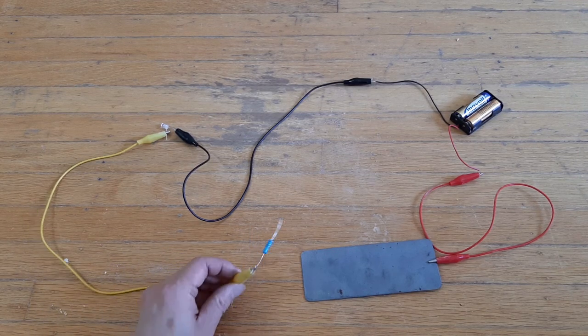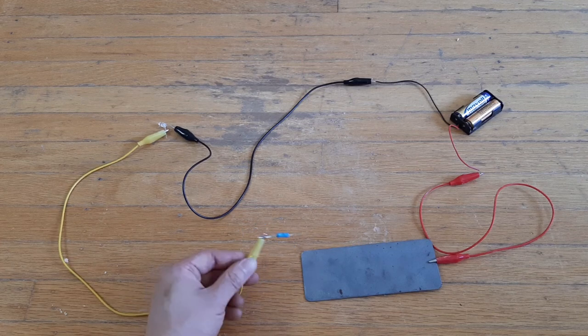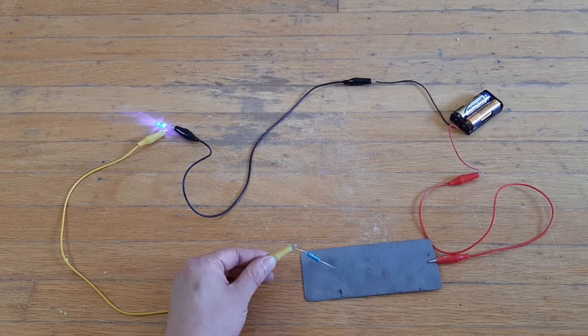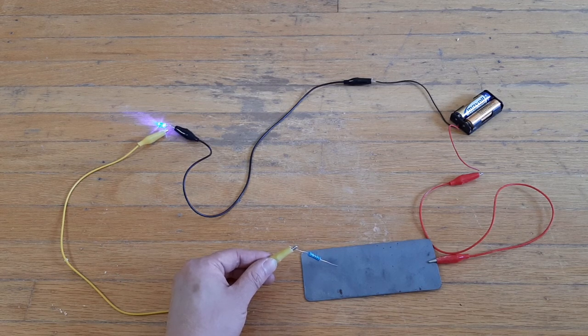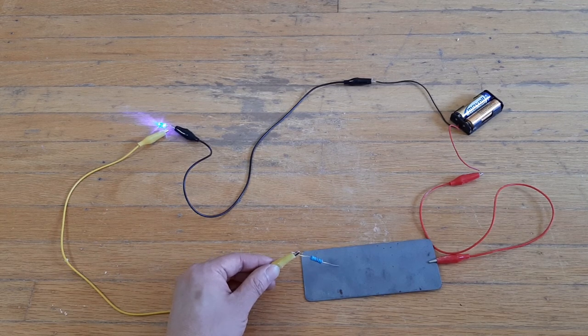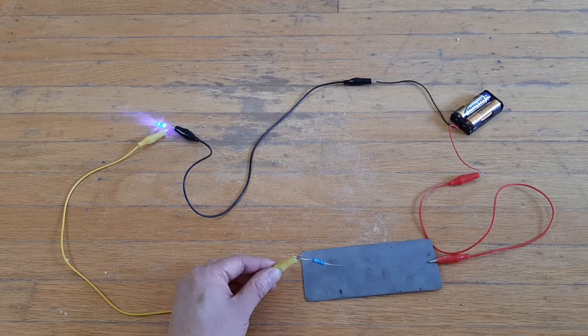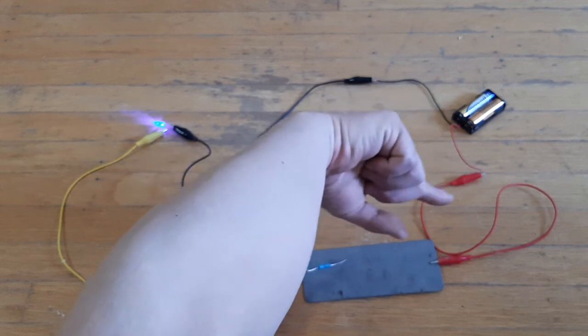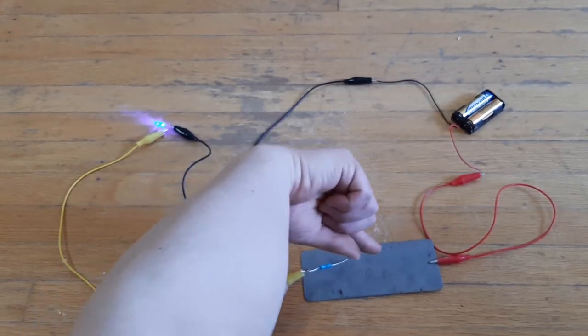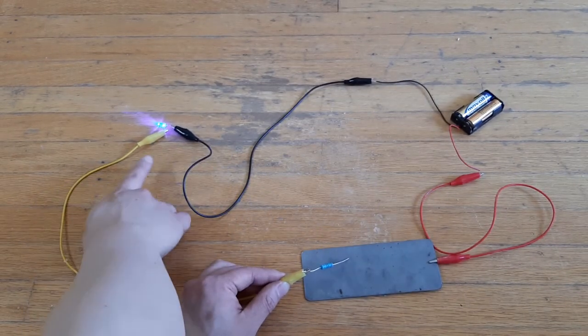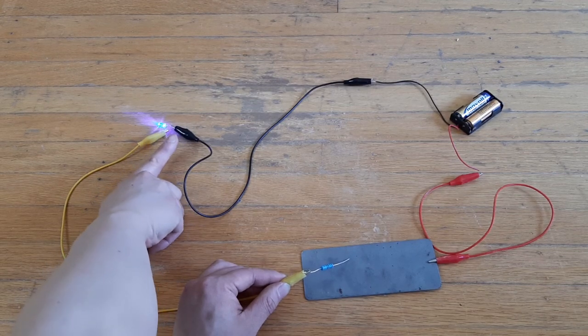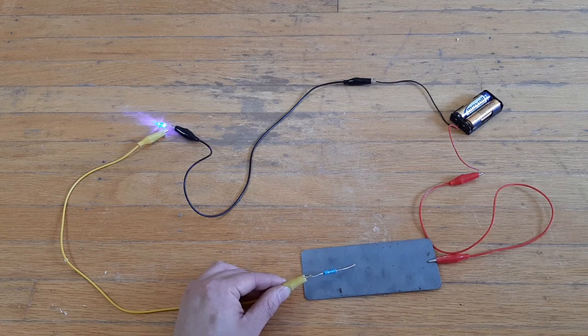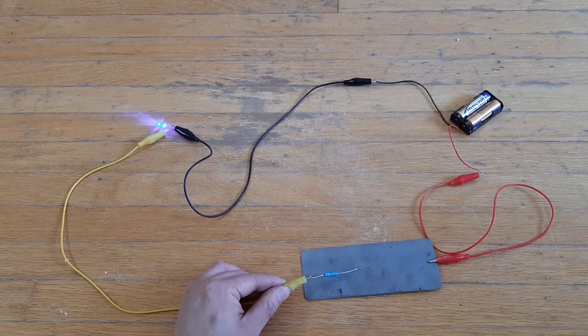But if you turn the switch on, I'm going to take this resistor and make contact with the metal plate, we can see that the LED is lighting up. In this case, it is said that the circuit is closed or it's a closed circuit, because there is a continuous path from the battery through the metal plate to the resistor, to the yellow wire, to the positive end of the LED, out the negative end, and back to the negative end of the battery. Essentially, it's a closed loop for electric current to go through.